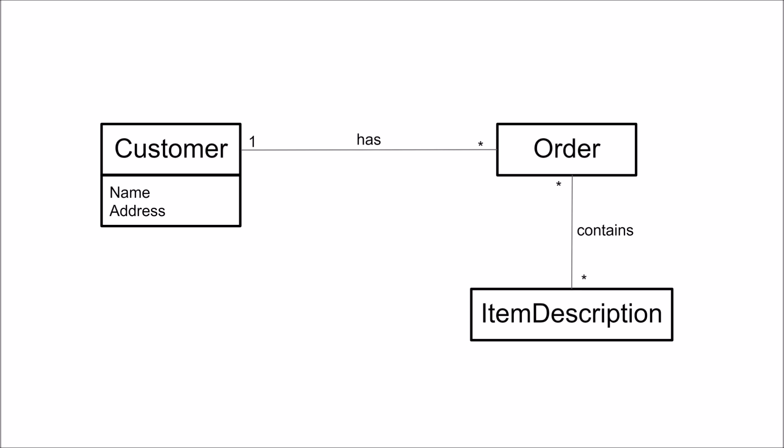Interestingly, we can have an order that contains zero or several item descriptions — maybe that's a little bit odd. This is the basic notation: boxes with names and associations. There is basically just one more thing for the notation, and that is generalization and specialization, but that is covered in more detail in the lectures, so we will leave it at this.